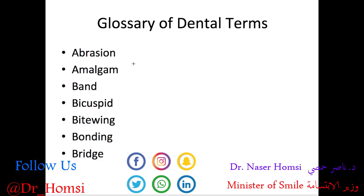Finally, let's go through a glossary of dental terms from the Glossary of Dental Clinical and Administrative Terms published by the ADA. Abrasion refers to wear on a tooth caused by brushing too hard, holding things in your teeth, or other rubbing actions. Amalgam refers to a dental filling material made up of a mixture of metals such as mercury, silver, tin, and copper — also known as a silver filling. A band is a metal ring put around a tooth with cement as part of orthodontic treatment. A bicuspid is another name for a premolar.